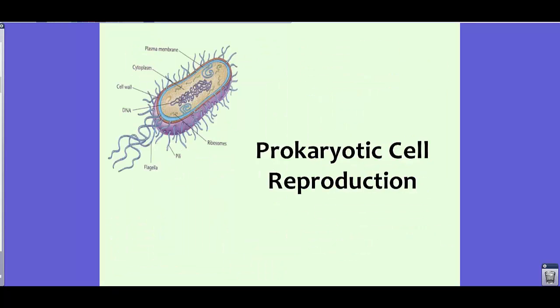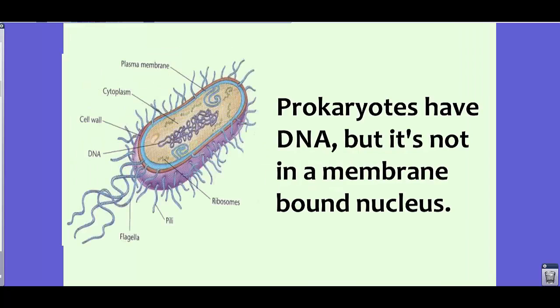Now let's talk about prokaryotic cell reproduction, as it's important for this section on mitosis. We've already learned that prokaryotes have DNA, but it's not in a membrane-bound nucleus. In a typical prokaryote, all the DNA resides inside — whereas in eukaryotes it would be inside the nucleus. In prokaryotes there is no nucleus, so the DNA is just sort of all over the place.